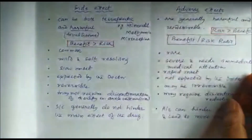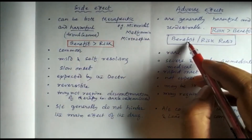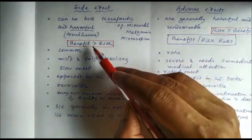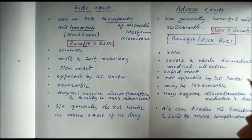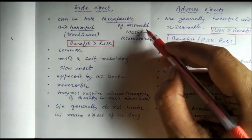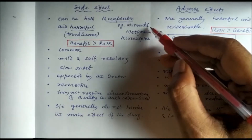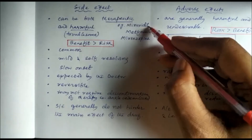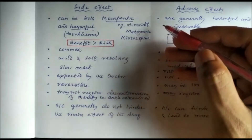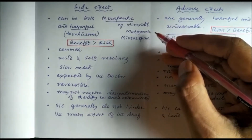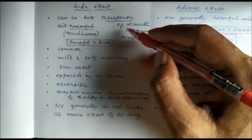To distinguish side effects from adverse effects, we consider the benefit-risk ratio. If benefit is more than risk, we call it a side effect; if risk is more than benefit, we call it an adverse effect. For example, minoxidil is a vasodilator used as an antihypertensive, but it has a side effect of causing hair growth. For a bald person who needs hair growth, this is a beneficial side effect — so side effects are not always harmful.